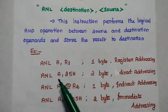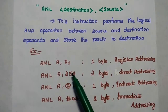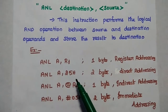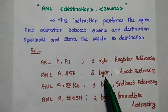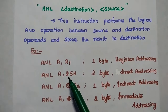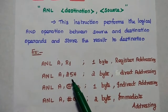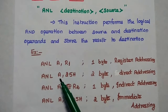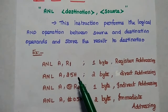The next example is ANL A, 25. Here 25 represents the memory location where the data is stored. It is a 2-byte instruction because the location is directly given in the instruction — 1 byte is for the opcode and another 1 byte is for the data.